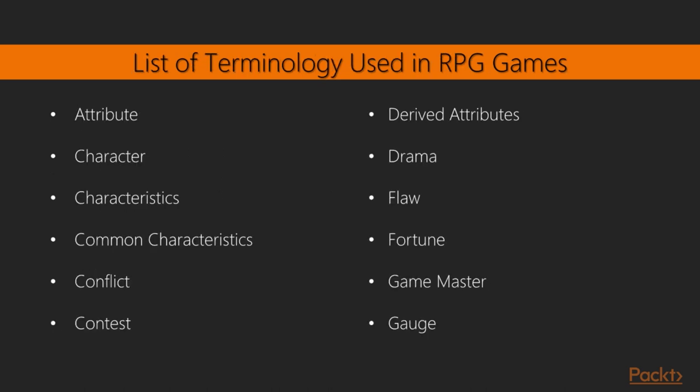Terminology: Every discipline has its own terminology. Here is a list of terminology used in RPG games. Attribute: a gauge that is a common characteristic. Character: a person in a game portrayed by a player, including possibly the game master. Characteristics: an aspect of a character — a character's name, height, age, beauty, and strength are some possible characteristics. Common characteristics: a characteristic common to all characters of a given type in a game.